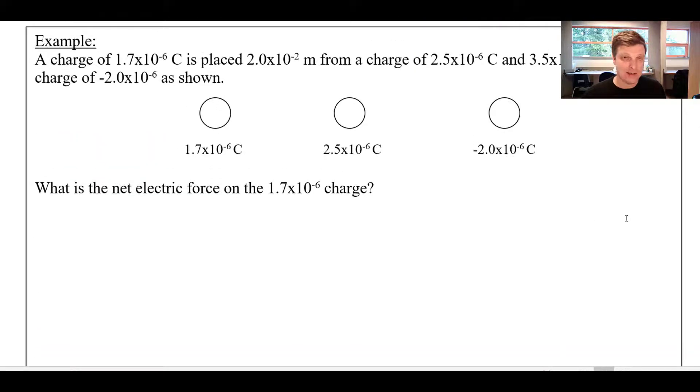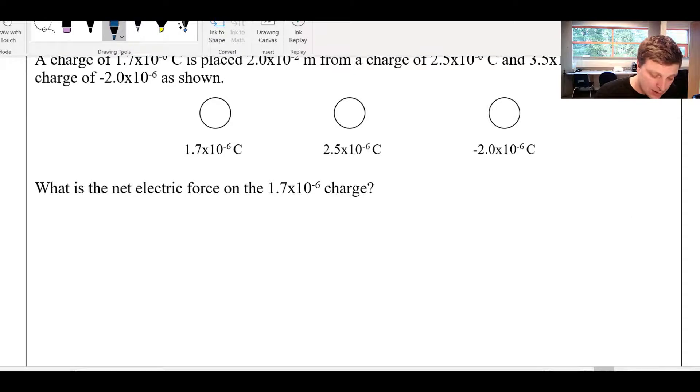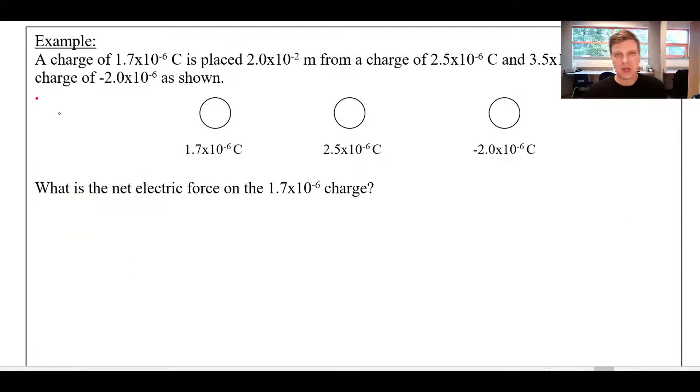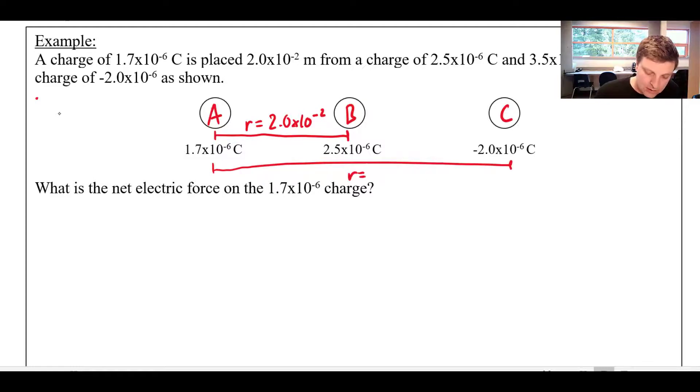Now, one last example here. What do we do when we've got multiple charges that are all interacting? So I've got three charges here all in a line, all in a row. Just to keep them organized, I'm going to call them A, B, and C. So the first charge here, 1.6 microcoulombs, is placed near a 2.5 times 10 to the negative 6 microcoulomb charge and a negative 2 times 10 to the negative 6 microcoulomb charge. And it tells me the distances between these things. This first distance, this R value is 2.0 times 10 to the negative 2. And then this R value is 3.5 times 10 to the negative 2 meters. What is the net electric force on that first charge, on charge A?